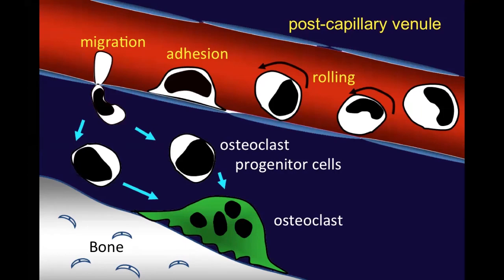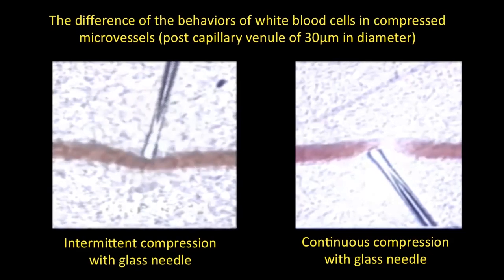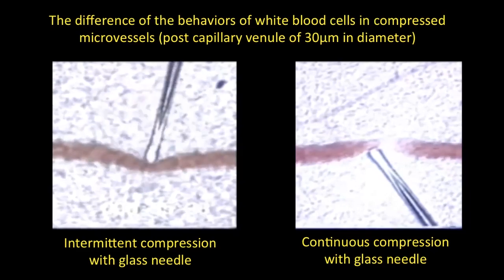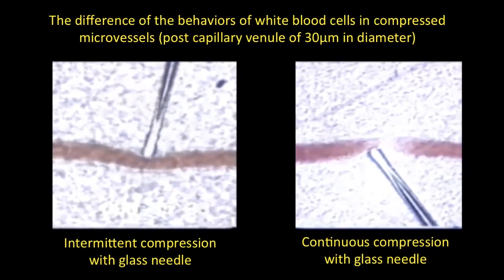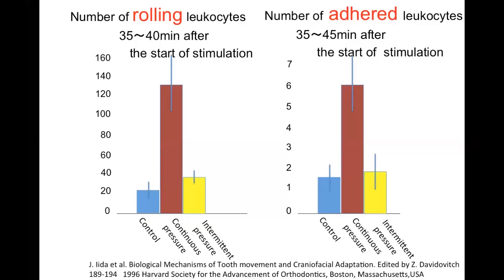Now, let me show you the difference between the behaviors of white blood cells in microvessels in an intermittent compression condition and a continuous compression condition. As can be seen here, continuous weak pressure as shown on the right side induces more lowering of cells and adherence of cells to the inferior cell surfaces than does intermittent pressure as shown in the left video. It could be considered that continuous compression shown as a red column contributes more to the induction of osteoclasts than does intermittent compression indicated as a yellow column.